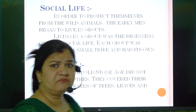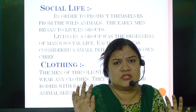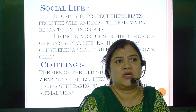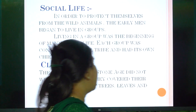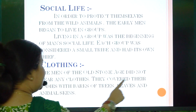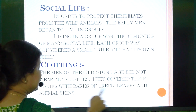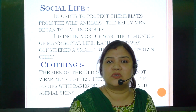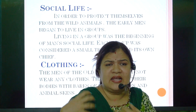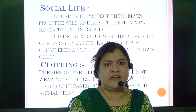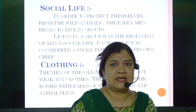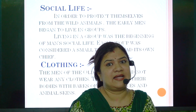Moving on to clothing: early men did not know anything about clothes. They were nude or naked, or they covered themselves with the bark of trees, leaves, or animal skin. The men of the Old Stone Age covered their bodies with barks of trees, leaves, and animal skin — just to protect themselves from harsh weather, cold, and heat.